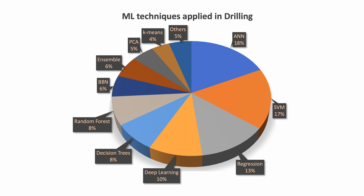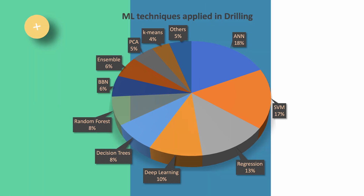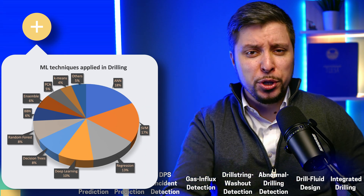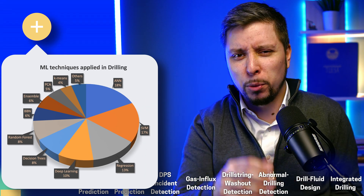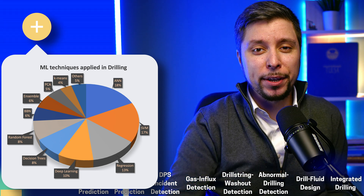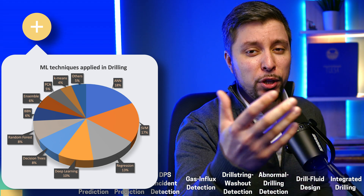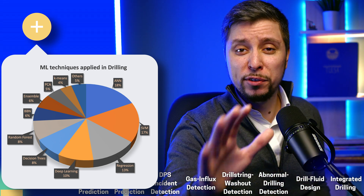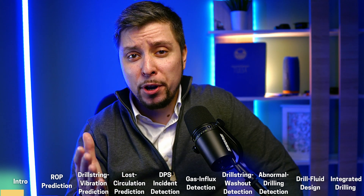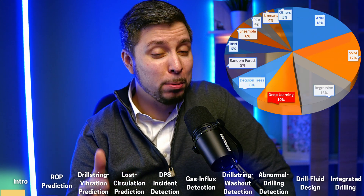On the screen there is a breakdown of machine learning methods discovered by the authors through that survey. Researchers use artificial neural networks, support vector machines, and regression in drilling applications — they account for the majority. I am concerned because it appears that we are lagging behind, as deep learning only applies to 10% of the cases.